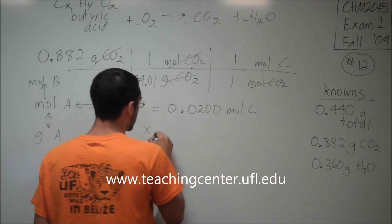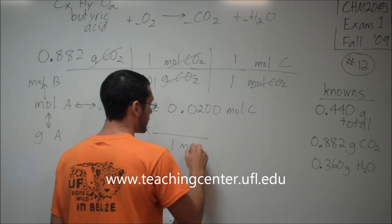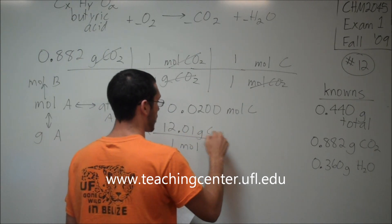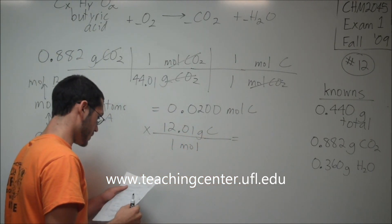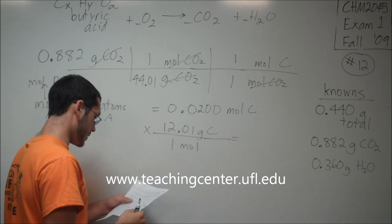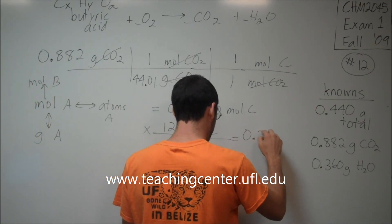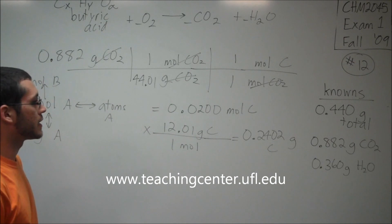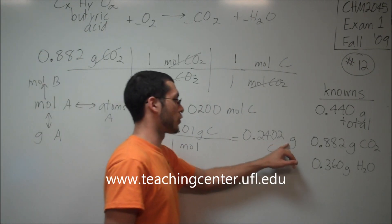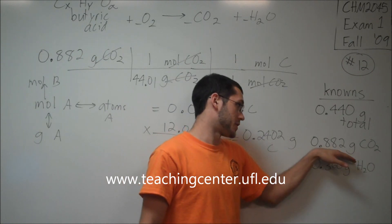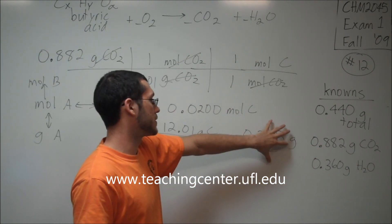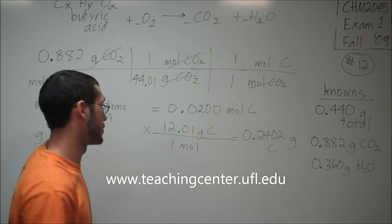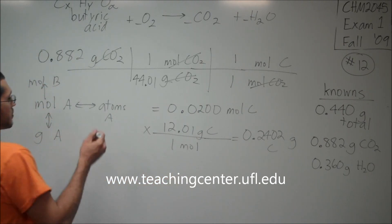Let's convert this to grams. In one mole of carbon, how many grams are there? 12.01 grams of carbon. We find 0.2402 grams of carbon. Now, why do we want grams? Although this is the grams of carbon found in this many grams of CO2, that still means that this is the grams of carbon that started out in butyric acid.